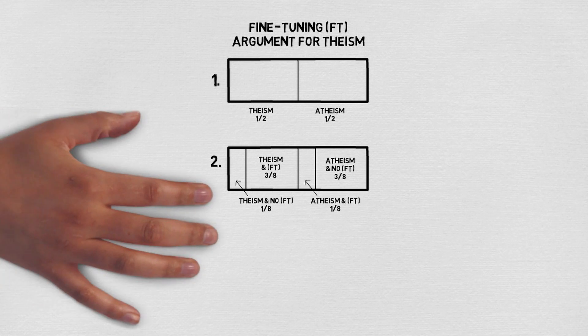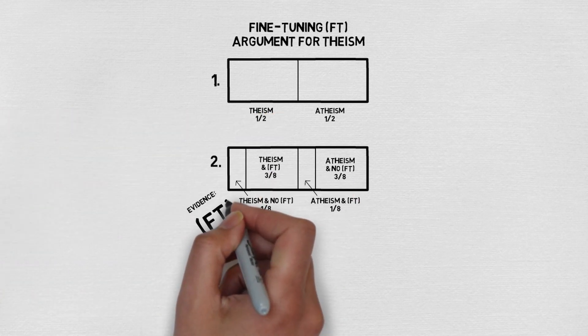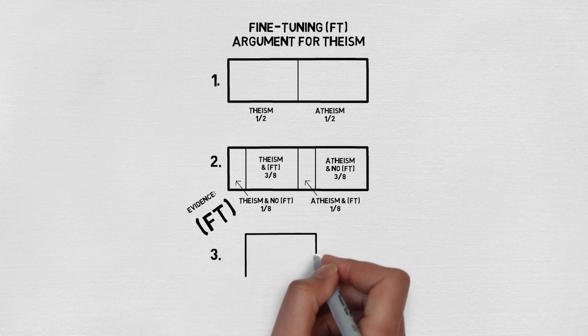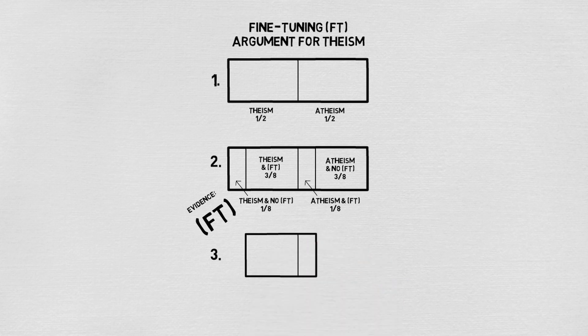We now get some evidence — namely that there's fine tuning in the world — and so we delete the portions of the bar where it says there is no fine tuning. To show this I'm going to draw another bar with these sections deleted. Notice also that I've renormalized the probabilistic values so that they add up to one. As I said in the previous video, this is just the process of changing the values of the remaining probability segments whilst preserving their ratios. So because the theism and fine tuning portion was three times the size of the atheism and fine tuning section, it must be three times the size after this process.